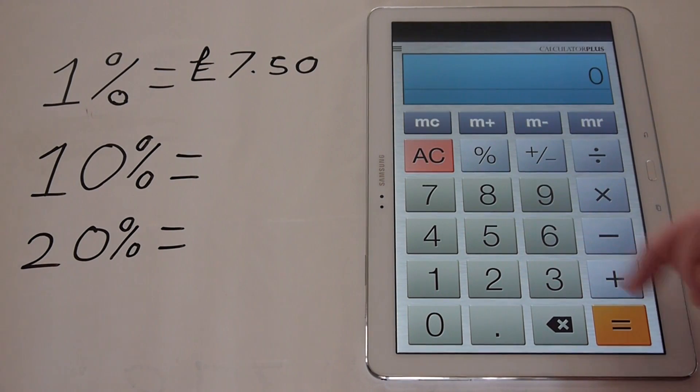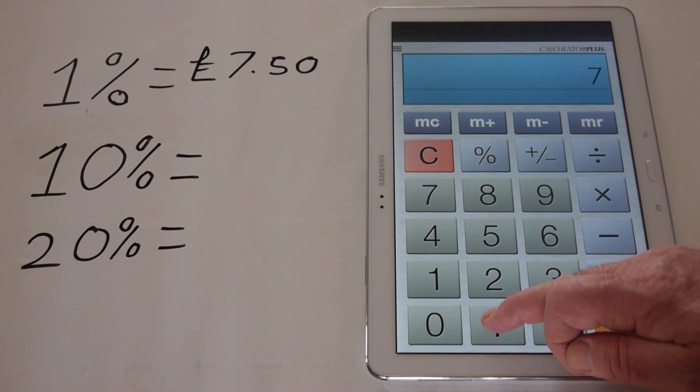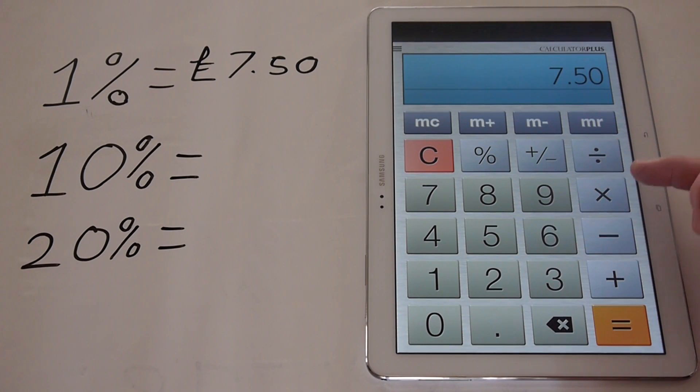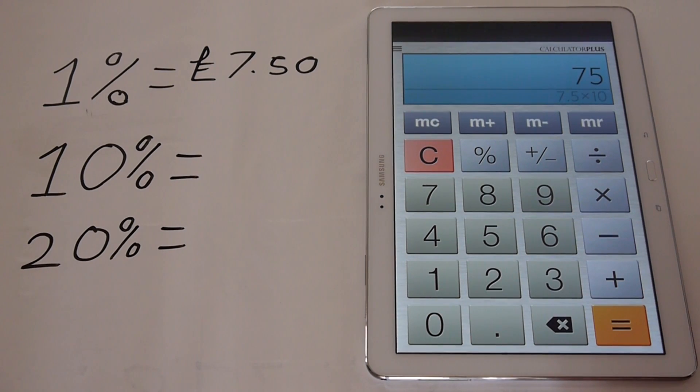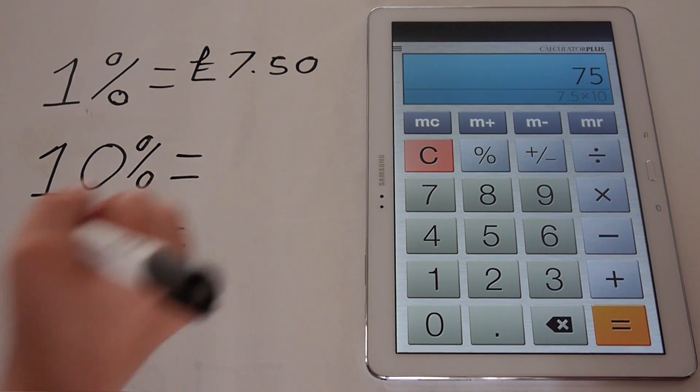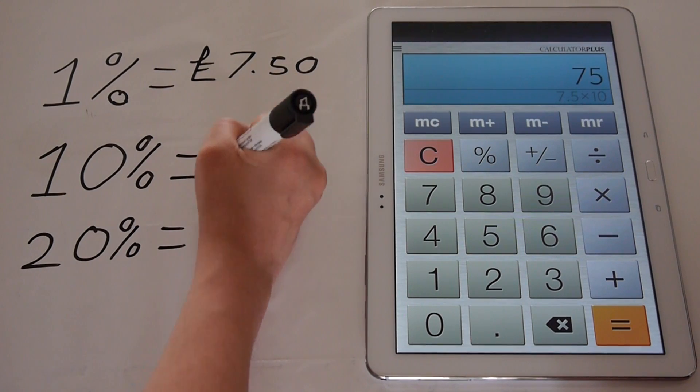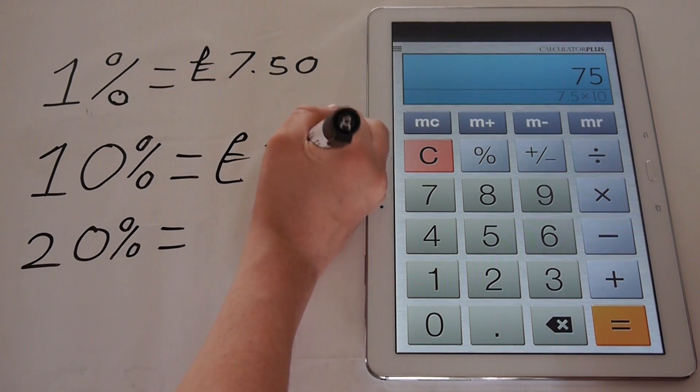Okay, so let's find 10% first. So 7.50 times 10 equals £75. So 10% of £750 is £75.